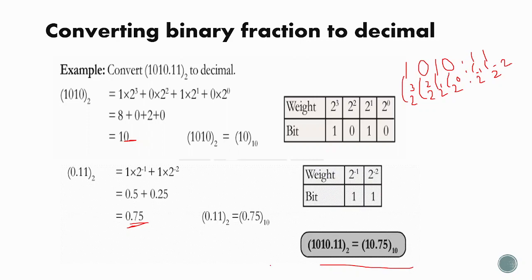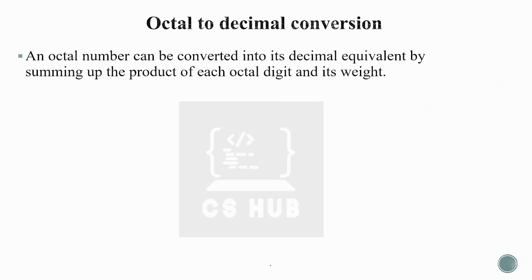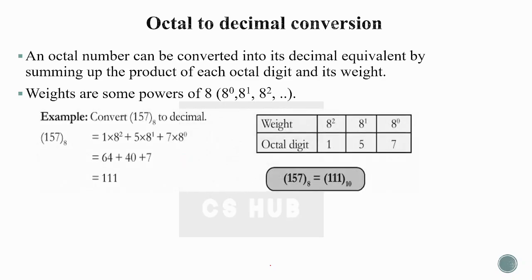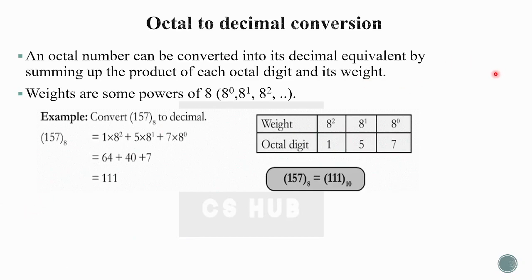Hope the concept is clear. It is easy once you set the positional weights. Now for octal to decimal: 157₈. The weights are powers of 8: 8⁰, 8¹, 8². We calculate 1×8² + 5×8¹ + 7×8⁰ = 64 + 40 + 7 = 111. We substitute and get the answer.